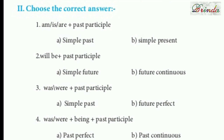Moving on to Roman number two — Choose the correct answer. 'Am/Is/Are + past participle' corresponds to Simple Present passive. 'Will be + past participle' corresponds to Simple Future. 'Was/Were + past participle' corresponds to Simple Past. 'Was/Were + being + past participle' corresponds to Past Continuous tense — because 'being' indicates the continuous form.